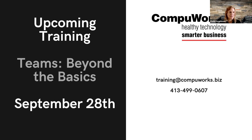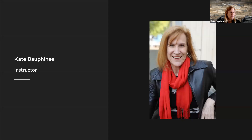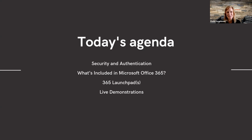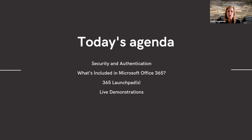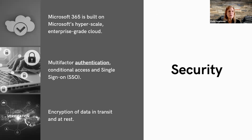Shall we get started? Great. Today's agenda: we're going to spend a very short time on security and authentication, because it's important and we're working in the cloud. We're also going to look at what's included in Microsoft Office 365 - it's an extensive array of products. We're going to look briefly at the launch pads to give you access to all these different products. Then we're going to show you some live demonstrations. Microsoft is built on a hyperscale enterprise-grade cloud called Azure.